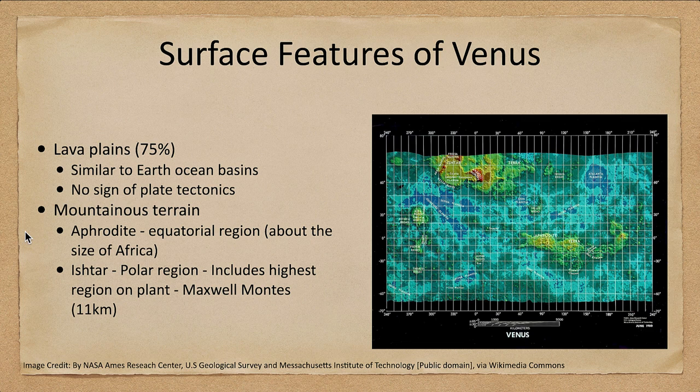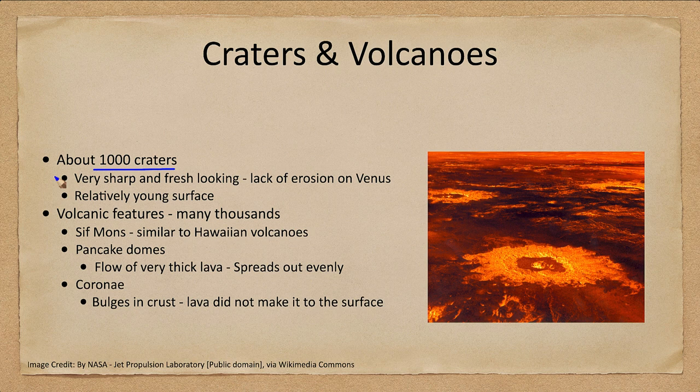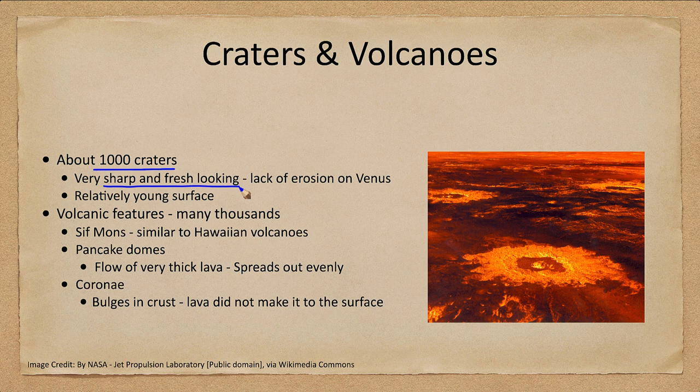Let's look at some of the features in a little more detail. There are about 1,000 craters on Venus. As you recall, that's more than on Earth, but far less than we saw on the Moon or Mercury. So Venus is at an intermediate age — its surface is not quite as young as Earth's, but is not nearly as old as that of the Moon or Mercury.